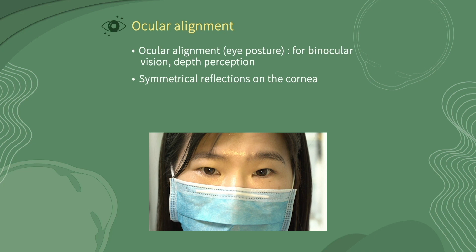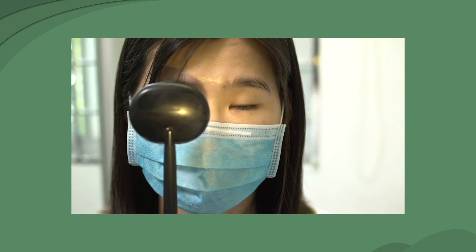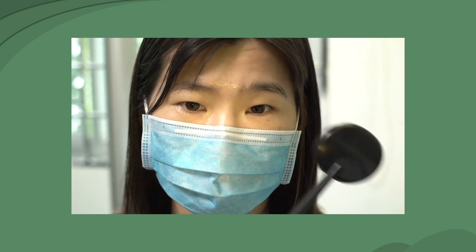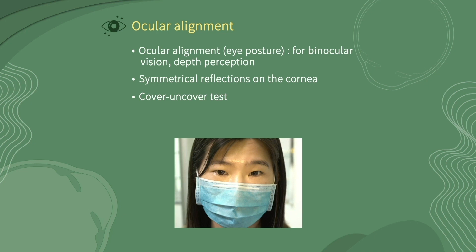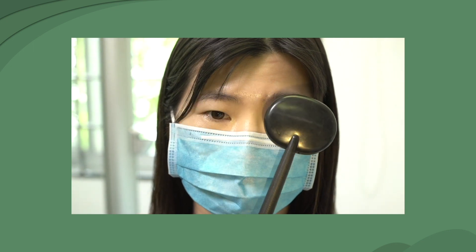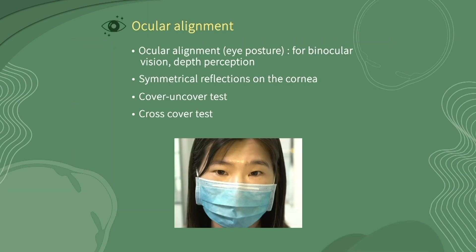In some cases, the strabismus may be occult and cannot be identified by corneal reflection. We can use the cover-uncover test and alternate cover test to unmask it. For the cover-uncover test, the examiner covers one eye with a hand or spatula and looks for movement of the other eye, then removes the cover and looks at movement of the previously covered eye. For the alternate cover test, the clinician covers one eye and moves the occluder to the other, back and forth, looking for any subtle movement of the eye.